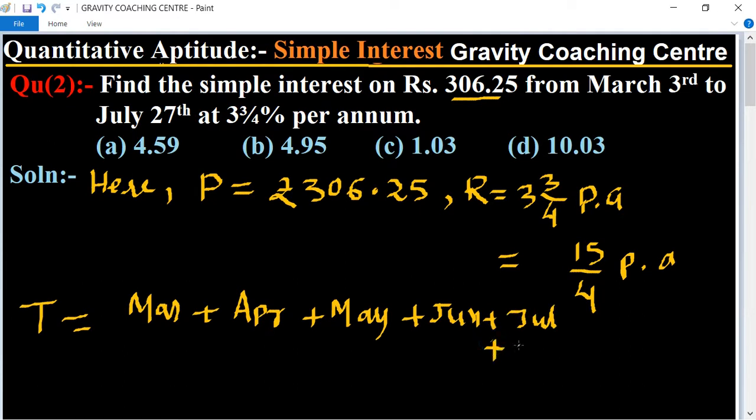Number of days in July equals 27, June equals 30, May equals 31, April equals 30, and from 3rd March to 31st, total number of days equals 29.